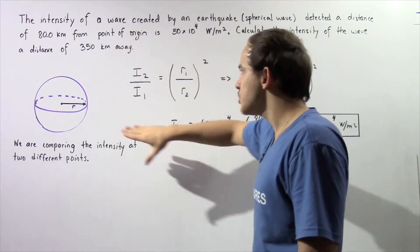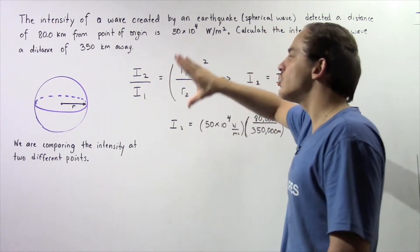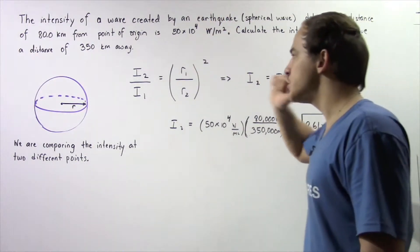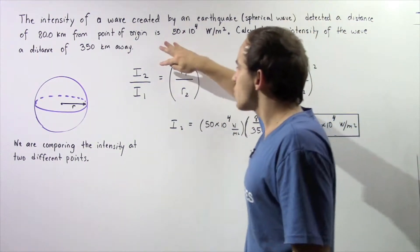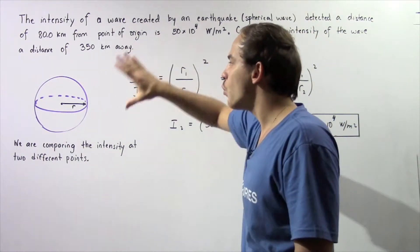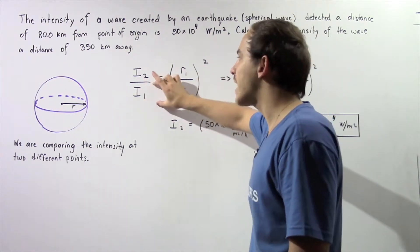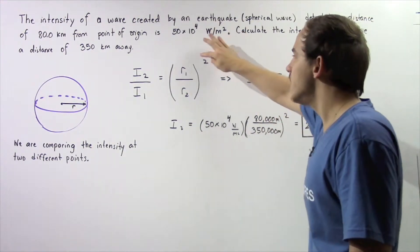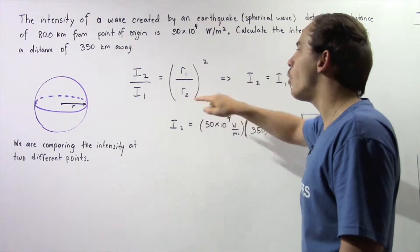So recall the relationship between our intensities at point 1 and 2 and the radius at point 1 and the radius at point 2 that we derived in the previous lecture. The intensity of our wave at point 2 divided by the intensity of our wave at point 1 is equal to the square of the radius at point 1 divided by the radius at point 2.